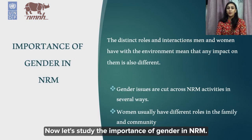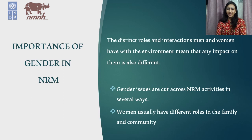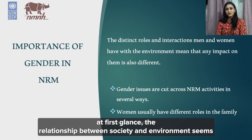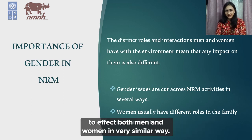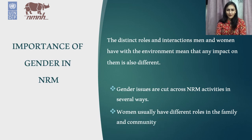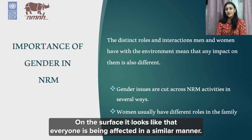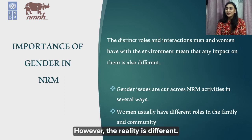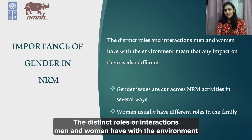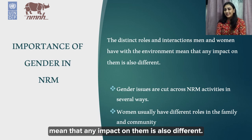Now let's study the importance of gender in NRM. At first glance, the relationship between society and the environment seems to affect both men and women in a very similar way. For example, take COVID — on the surface, it looks like everyone is being affected in a similar manner. However, the reality is different. The distinct roles and interactions men and women have with the environment mean that any impact on them is also different.